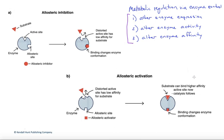In the second one, we can alter enzyme activity. In this case, we're altering the functionality of an enzyme that's already been produced. This is often done chemically through alterations to the protein structure. One common mechanism there is adding and removing phosphate groups, turning the enzyme on or off.